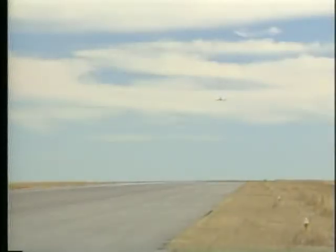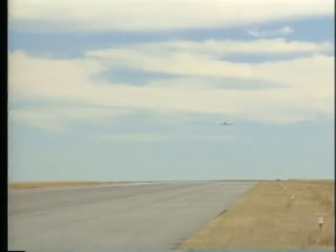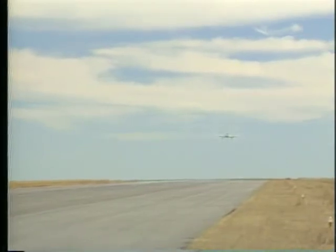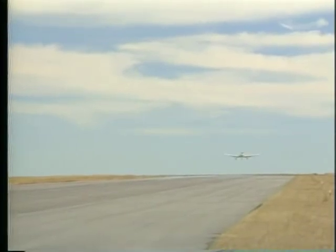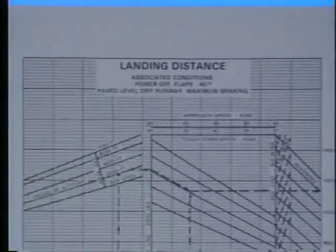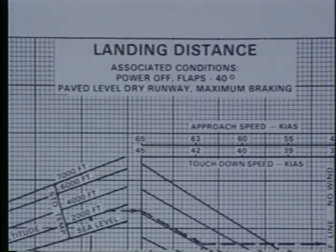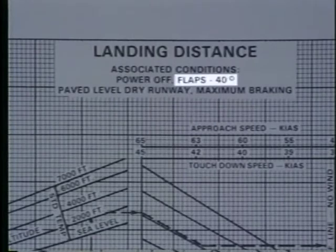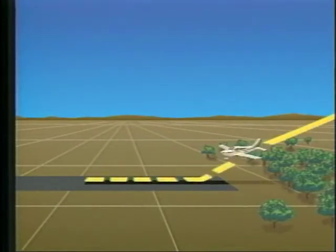Landing distance charts are also helpful planning tools. Although they vary somewhat, they're designed to enable you to determine how much runway is required to land the airplane safely. This is particularly important if your destination airport has a relatively short runway. This particular chart provides precise landing information as long as you follow the specified conditions — it is only valid during a power-off landing with flaps set at 40 degrees.